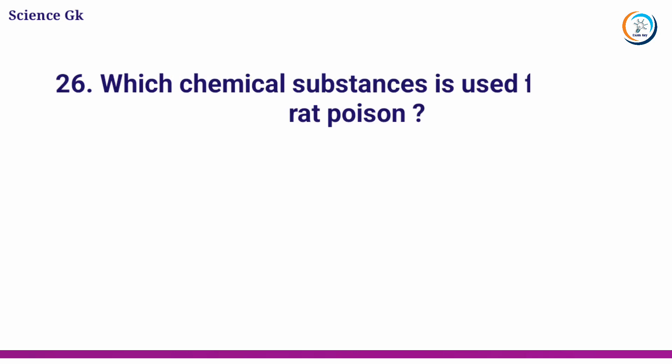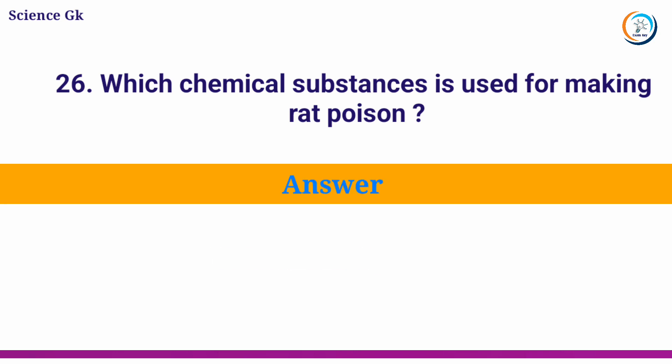Which chemical substance is used for making rat poison? Answer: potassium cyanide.